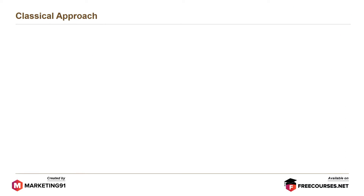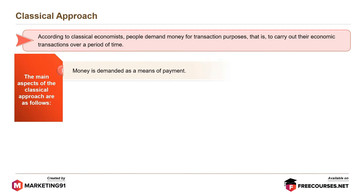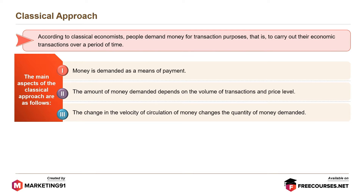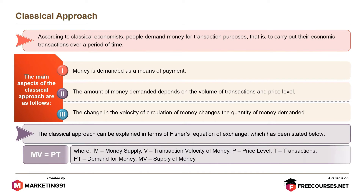First is the classical approach. According to classical economists, people demand money for transaction purposes, that is, to carry out their economic transactions over a period of time. Money is demanded as a means of payment. The amount of money demanded depends on the volume of transactions and price levels. The change in the velocity of circulation of money changes the quantity demanded. This can be explained by Fisher's equation of exchange: MV equals PT, where M is the money supply, V is transaction velocity of money, P is the price level, and T refers to transactions. PT is demand for money and MV is supply of money.